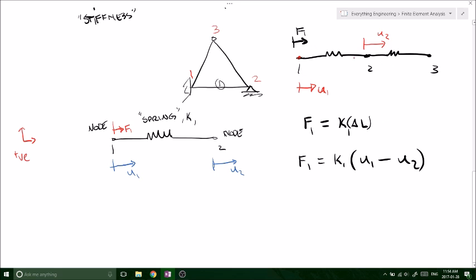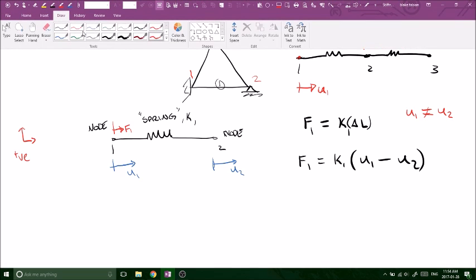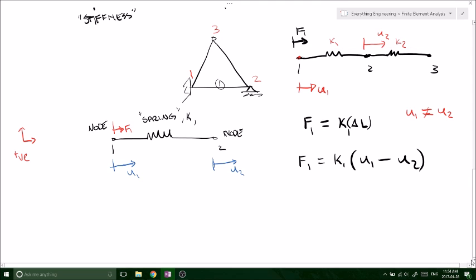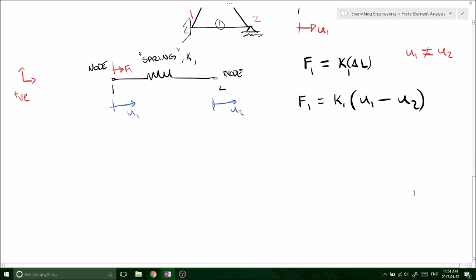Because they're not going to be equal, because K1 doesn't necessarily have to equal K2. Therefore U1 does not equal U2. So the difference in U1 to U2 would be the total delta L that the supplied force has caused our first element to move. And it will be in direct linear proportion to our spring constant K. So there we go. There's our first equation.